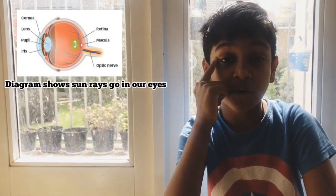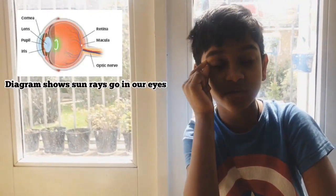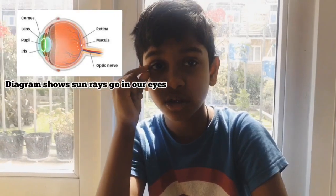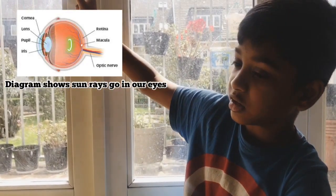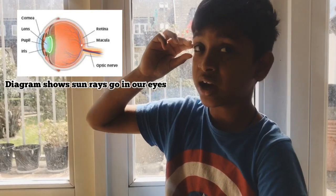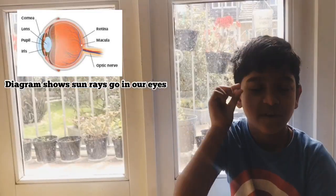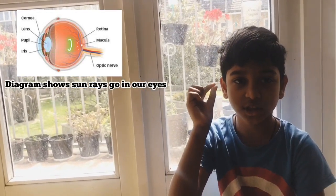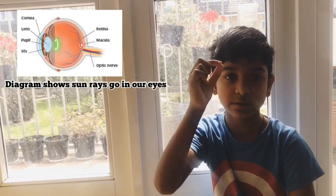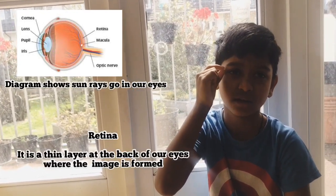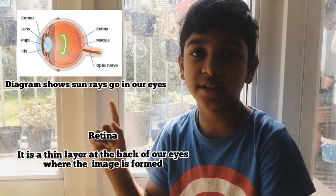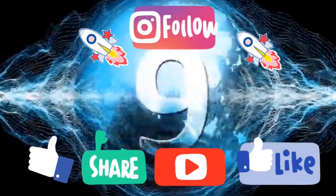So here's the sun. It produces light, it goes through our eyes, then it refracts and then converges into a point where it damages our retina. That's why you shouldn't watch the sun directly.